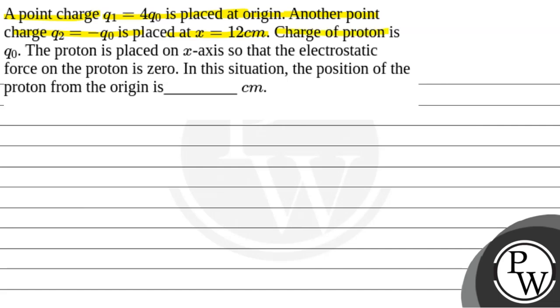Another point charge Q2 equal to minus Q0 is placed at x = 12 cm. Charge of proton is Q0. The proton is placed on x-axis so that the electrostatic force on the proton is zero. In this situation, the position of proton from origin is blank centimeters.